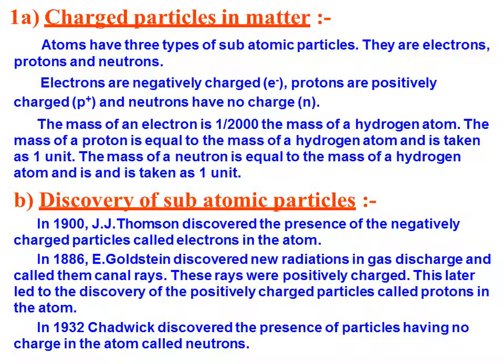In 1900, J.J. Thomson discovered the presence of negatively charged particles. J.J. Thomson was the person who discovered the presence of electrons, which are also called negatively charged particles. But before him, in 1886, E. Goldstein discovered new radiation in gas discharge and called them canal rays. These rays were positively charged, and this later led to the discovery of positively charged particles called protons.